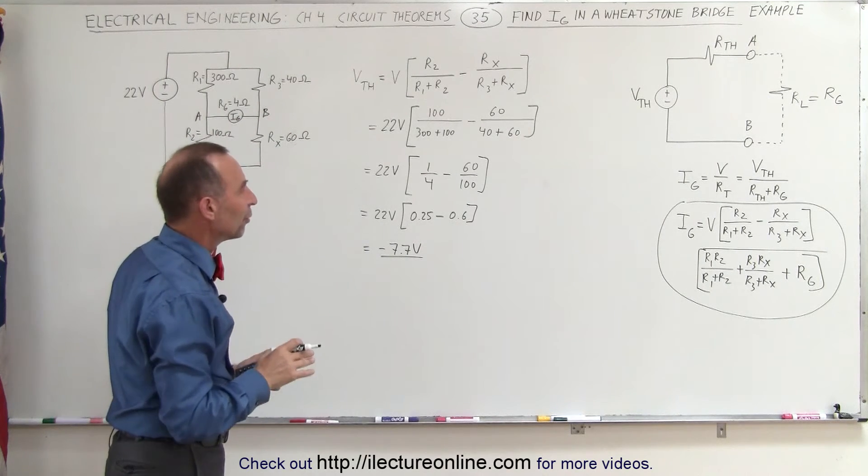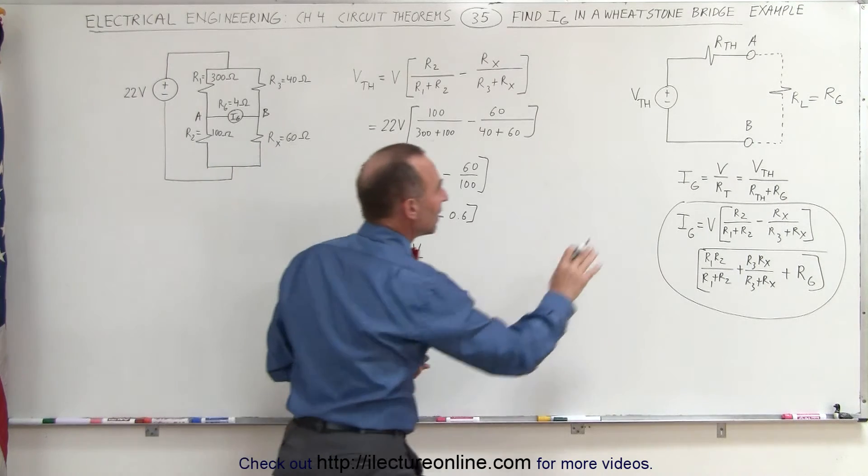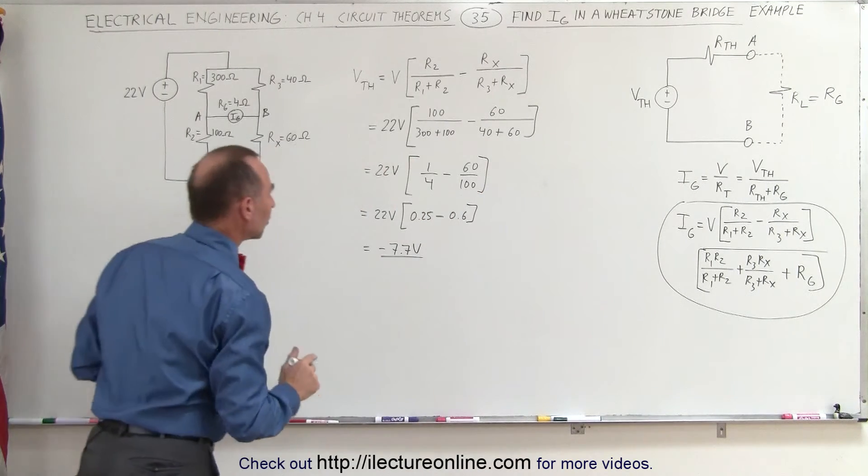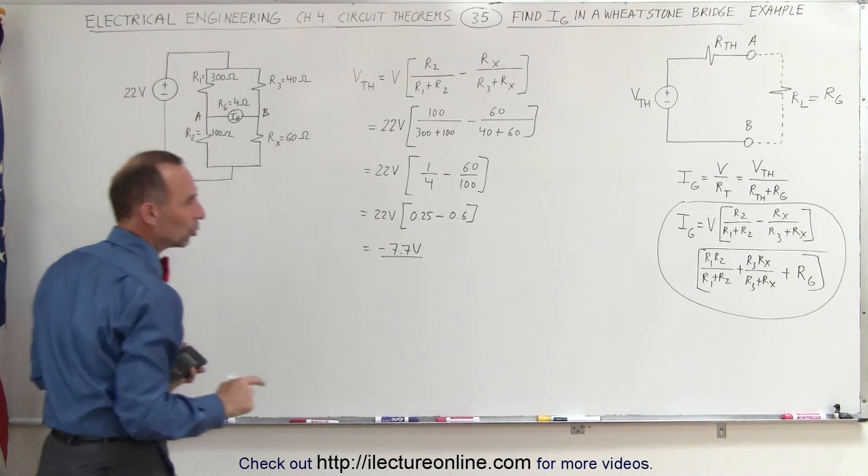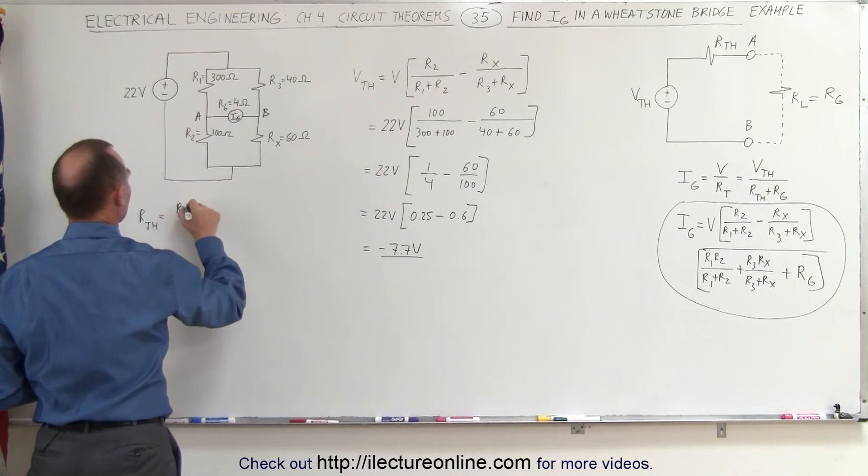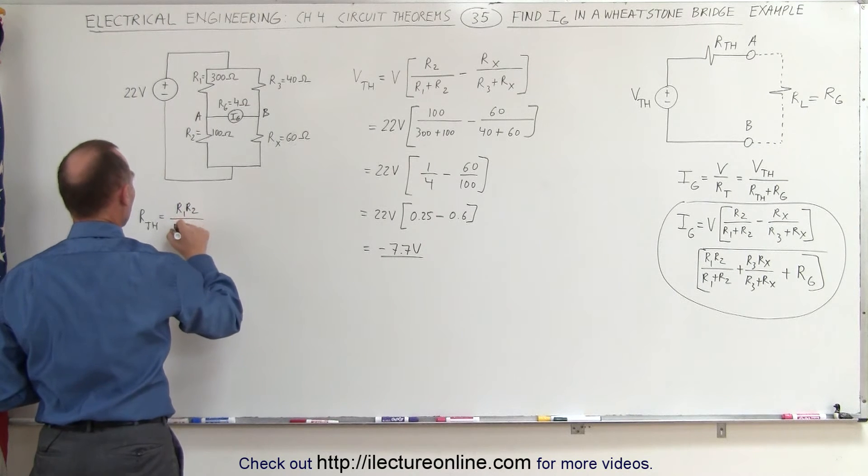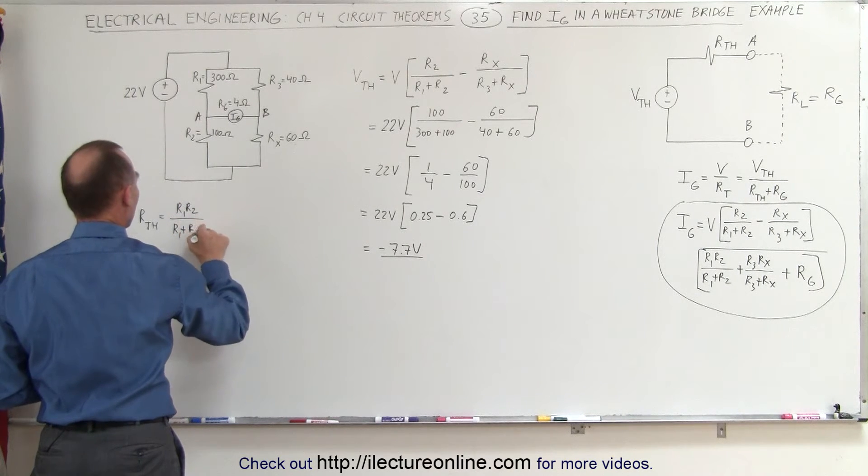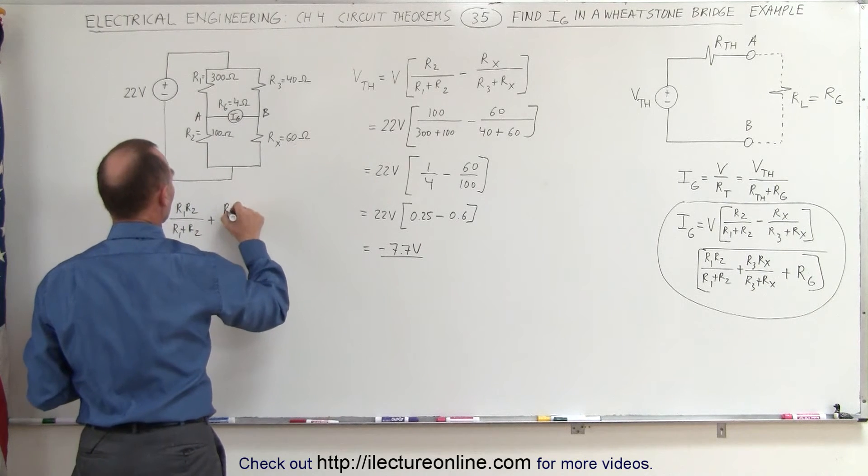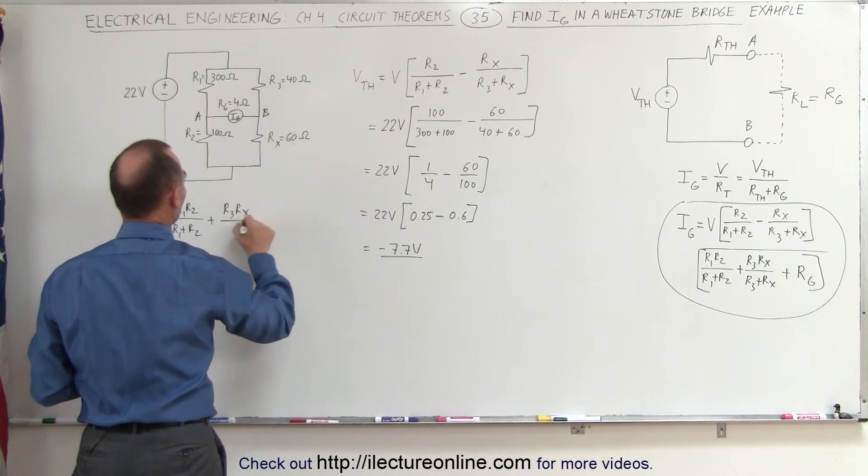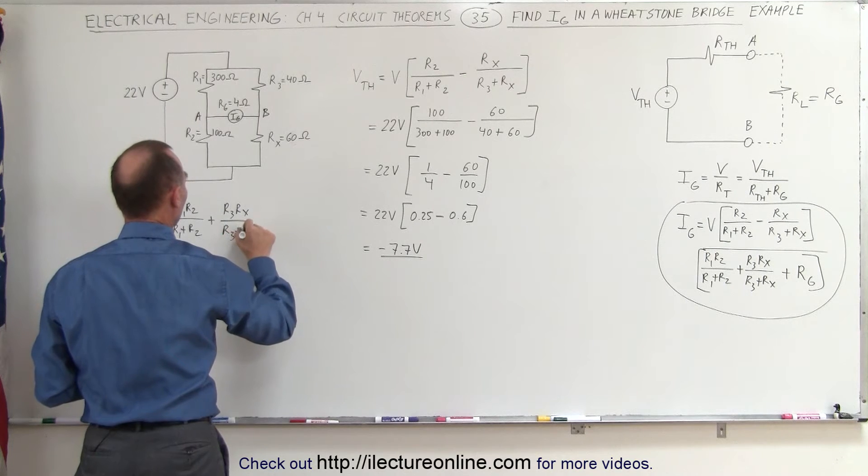Now that I have the Thevenin voltage, let me go ahead and find the resistance, Thevenin resistance. R Thevenin is equal to, and that would be equal to R1 times R2, that's the product over the sum, plus the product over the sum of the second parallel branch R3, Rx over R3 plus Rx.